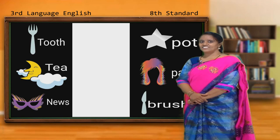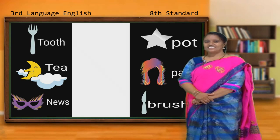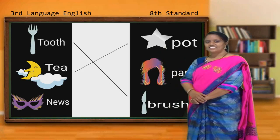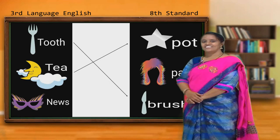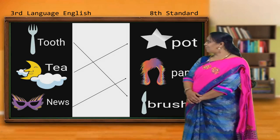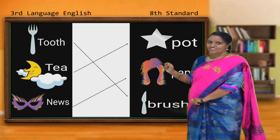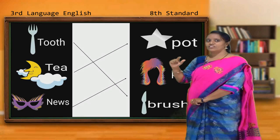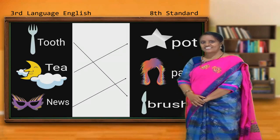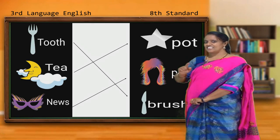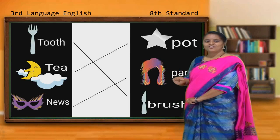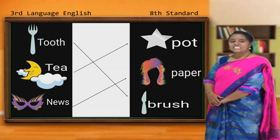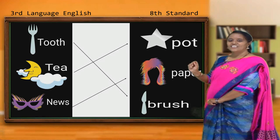Most of you have done it, I think. You are matching fork with knife, moon with star, mask with wig. Now, what have you matched the pictures? Let us associate the words of the pictures. Fork and knife. Toothbrush. Moon and star. Teapot. Mask and wig. Newspaper.